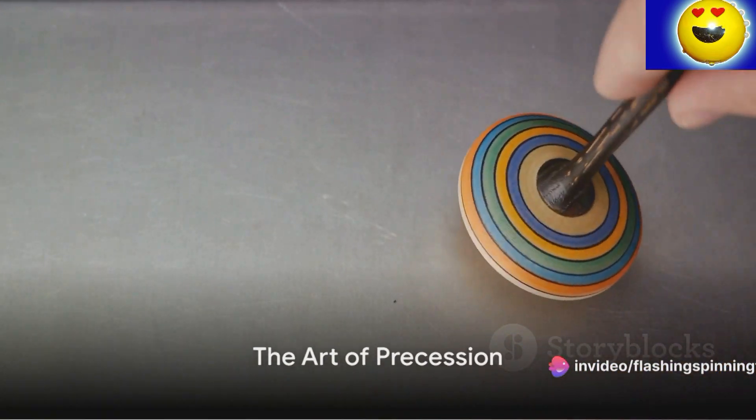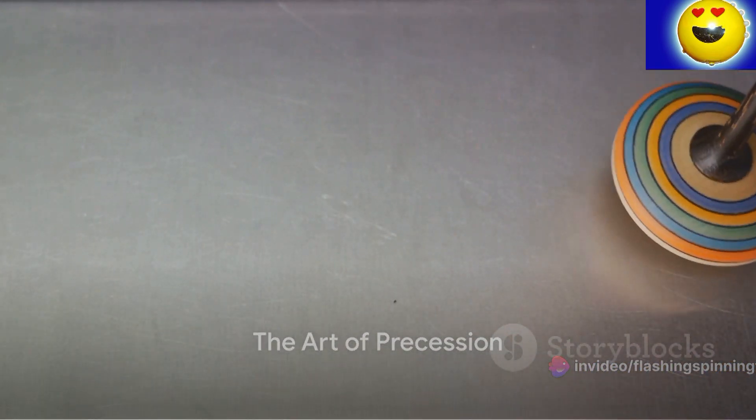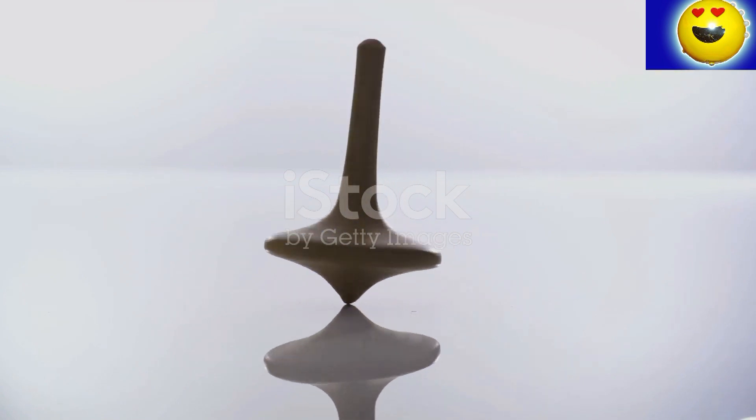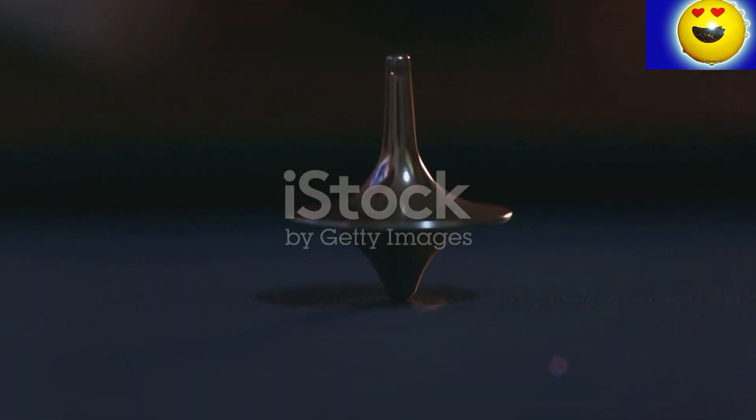That's not all, though. There's also the matter of precession. This is the slow, circular motion the top makes as it spins. This is a result of gravity and the top's own angular momentum negotiating a compromise.